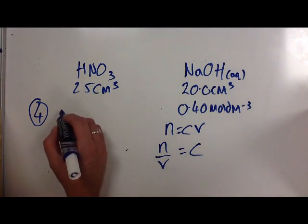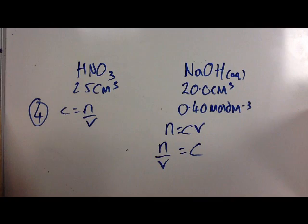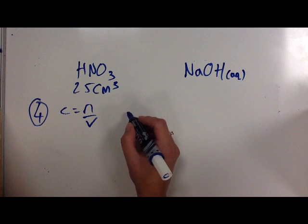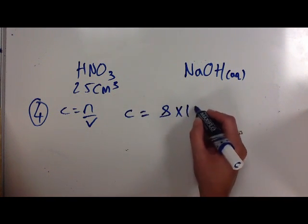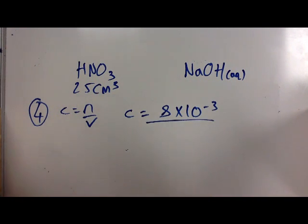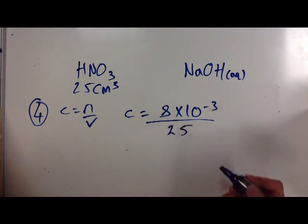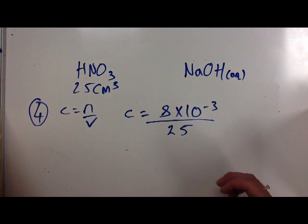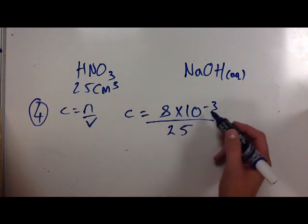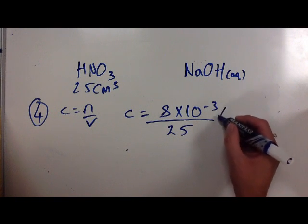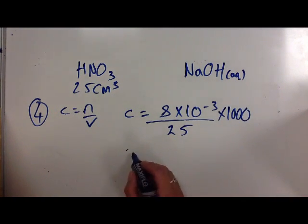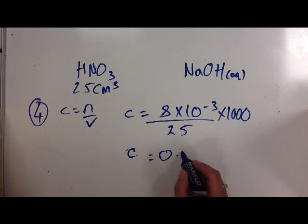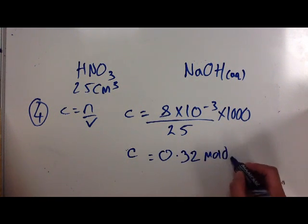Step four, using our C equals N over V. I'm going to get rid of this information, as we don't need it anymore. So, the concentration equals the number of moles, which is 8 times 10 to the minus 3, divided by the volume. We've got the same problem here, that our volume is in decimetres cubed. Instead of making a complicated number, fraction, and a fraction, I can turn the bottom fraction upside down, do 8 times 10 to the minus 3, divided by 25, times by 1000. That gives me a final value in the correct units of 0.32 moles per decimetres cubed.